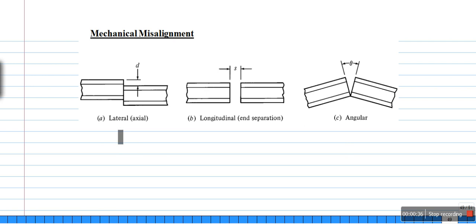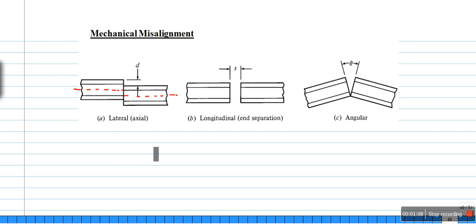They are lateral displacement, longitudinal displacement, and angular displacement. When we try to join two fibers, this is the fiber axis. The two fiber faces may be separated such that the fiber axes are separated by a distance d — we call this lateral displacement.